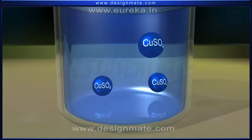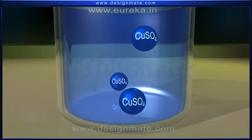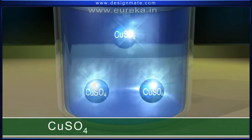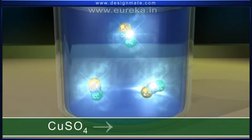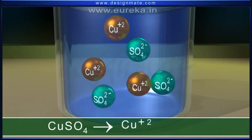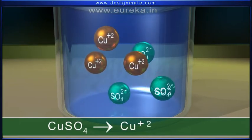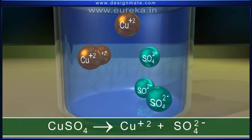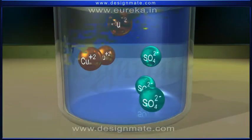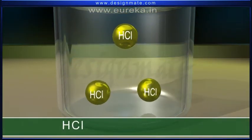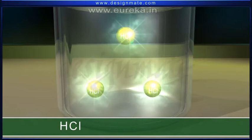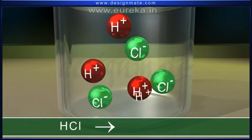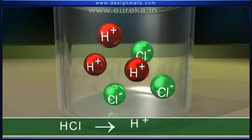Examples of some other strong electrolytes are copper sulfate, which dissociates into copper ions and sulfate ions; and hydrogen chloride, which splits into hydrogen and chloride ions, and so on.